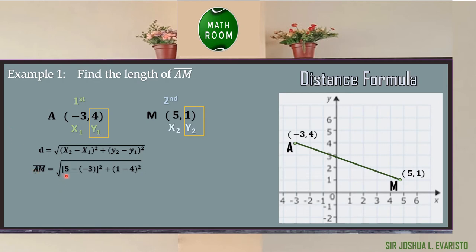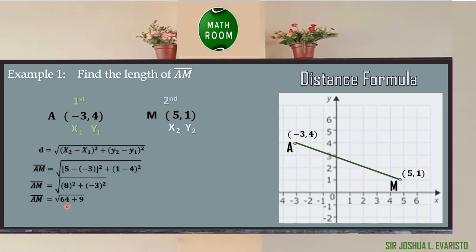After substitution, we can now solve. 5 minus negative 3 is equal to 8, and 1 minus 4 is equal to negative 3. So we have segment AM equal to the square root of 8 squared plus negative 3 squared. 8 squared is 64, and negative 3 squared is 9. 64 plus 9 is equal to 73. Therefore, segment AM is equal to the square root of 73, or approximately 8.54.